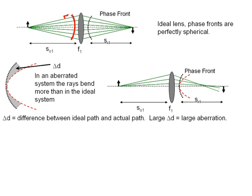However, in an aberrated system, one that does not obey the paraxial approximation, the rays bend more than the ideal shape. So if this is your ideal curvature here, your spherical shape, in an aberrated system, it's going to be more of an elliptical phase front that will have a stronger bend.